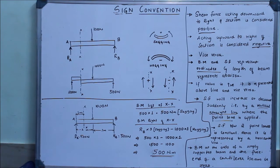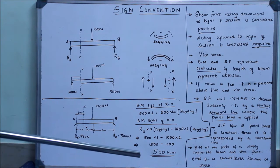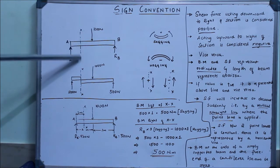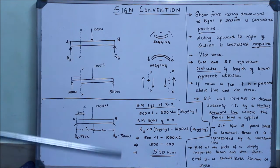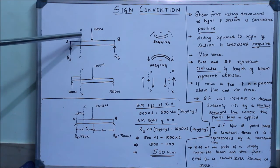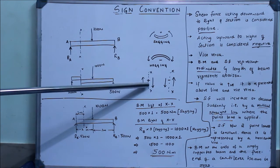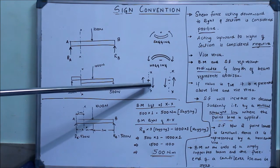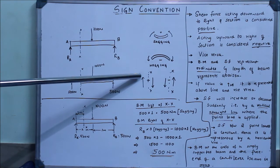Now I will go straight into the sign conventions that we need to use here. First, we need to consider a section — a place where we need to know the bending moment or the shear force. I have taken an XX section here; it can be anywhere. The sign convention to be followed is: if you consider the forces to the right of the section and the forces are acting downward, you take them as positive. Or if you consider the forces acting to the left of the section and the forces are acting upward, you consider them as positive.